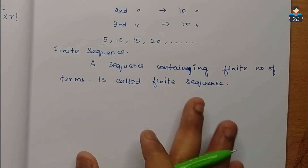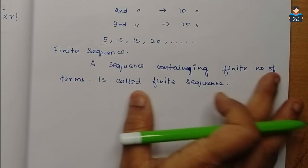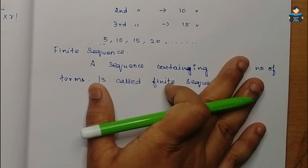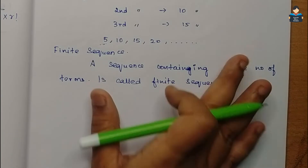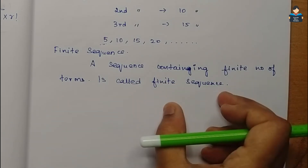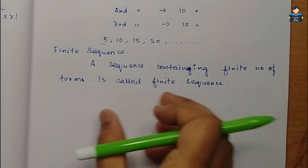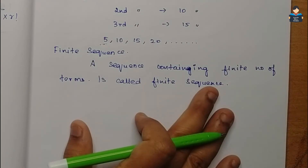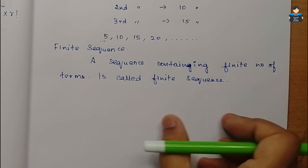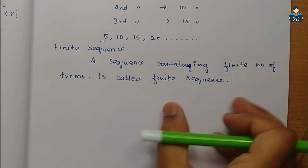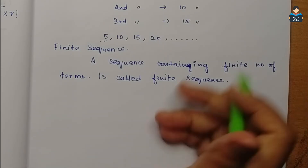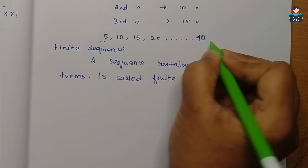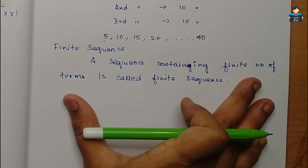Another example from our book: how many generations are there — parents, grandparents, great-grandparents. From the 1st generation up to the 10th generation, the sequence ends at the last term. Because it has a last term, this is called a finite sequence.